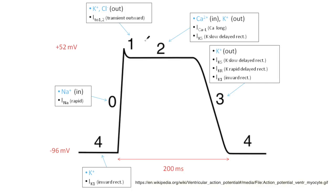Talking about the ventricular myocyte potential, there are five different phases that we need to know about, and these are phase 0, 1, 2, 3, and 4.